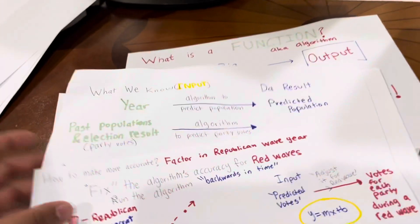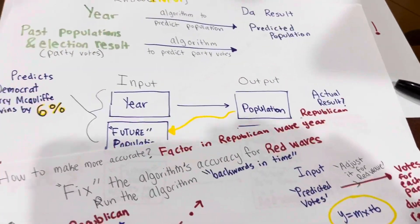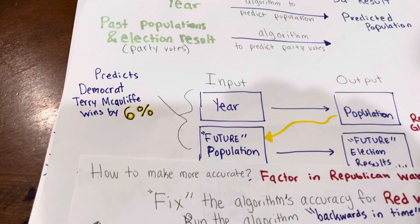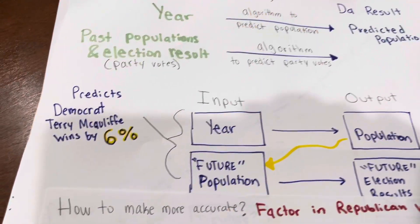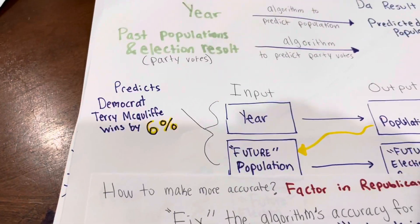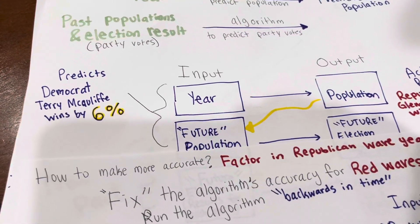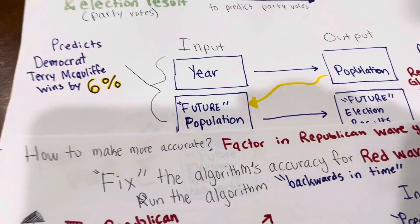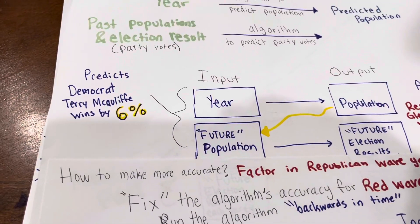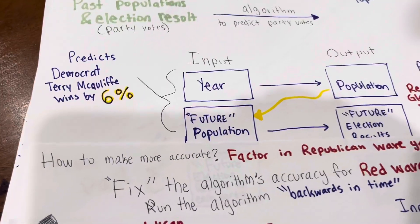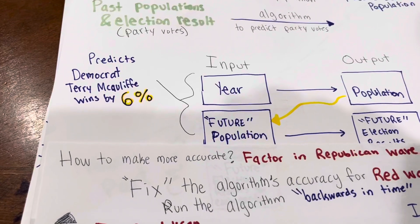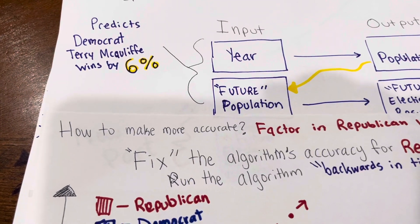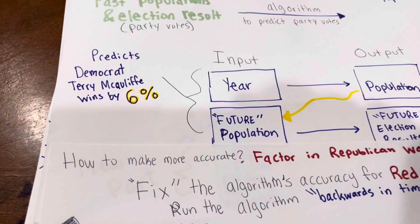After doing that, I included a two-variable equation, and this predicted Terry McAuliffe, the Democrat, winning by 6%. If I had made this algorithm six months in advance when the Democrat was expected to win, I probably would have said that's a pretty good estimate and ended it there. But because I was hearing on the news a lot that the election seemed to be getting closer, I got a little biased and decided to add another factor to it.